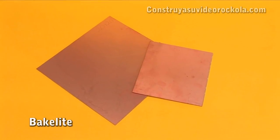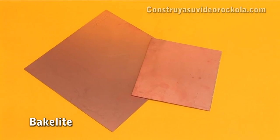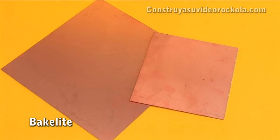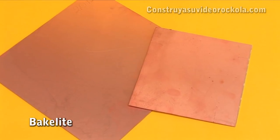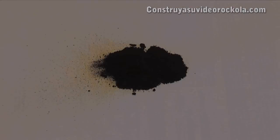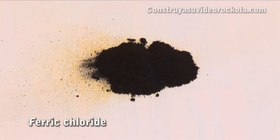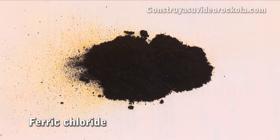Bakelite - plastic phenolic foil covered with a copper foil, which will print the drawing board. Ferric chloride - corrosive compound used for developing the PCB.